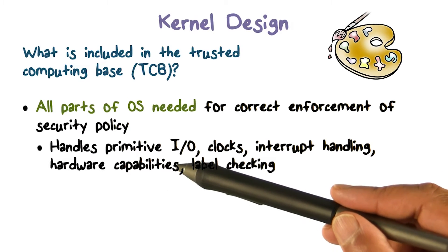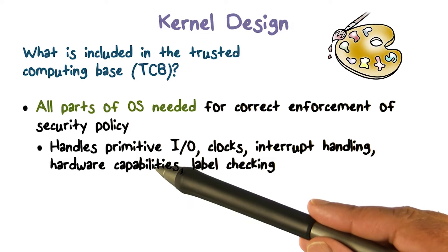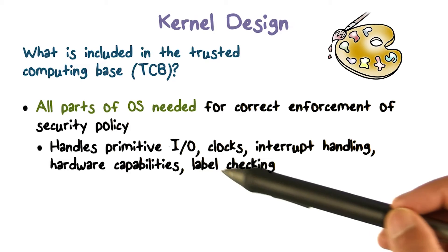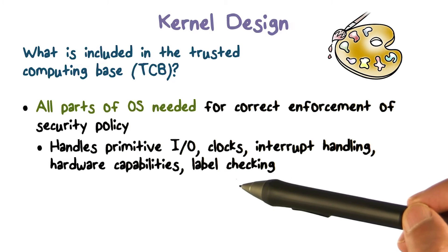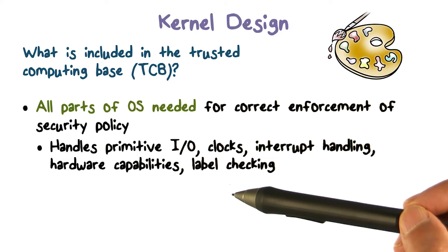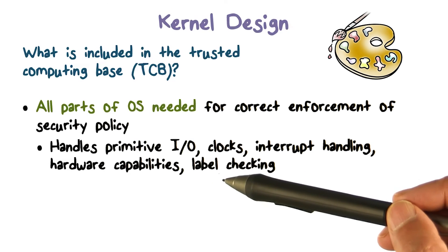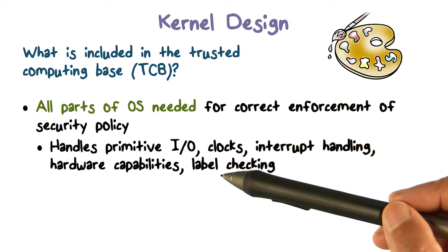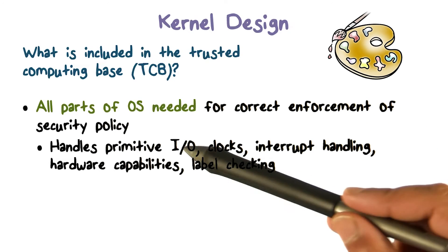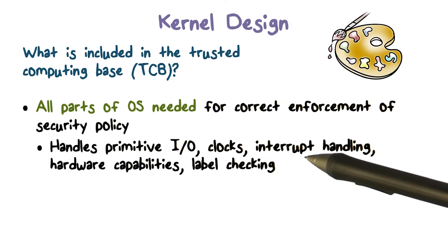In memory, for example, we have TLBs for speeding up the address translation process. Who can manipulate those controls and what part of memory somebody can use? If you're doing mandatory access control, there's label checking — the model relies on the notion of labels, making sure secret information doesn't flow into an unclassified object. That's part of the security policy, and correct enforcement has to be implemented by the security kernel, including direct access to hardware resources and support for these various access control models.